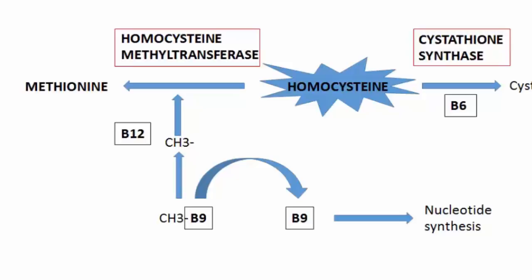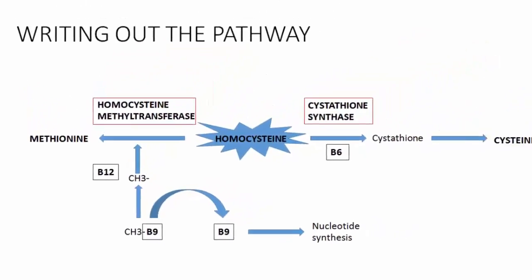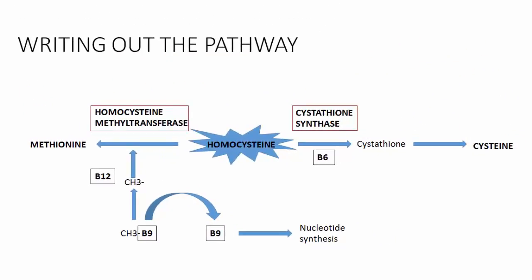So really, homocysteine methyltransferase is serving two purposes: tacking off that methyl group from B9 and putting it on homocysteine to form methionine. This process requires vitamin B12 to work properly. Normally within cells, both of these pathways are happening at the same time.